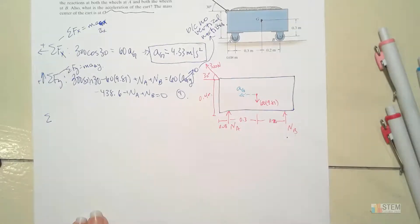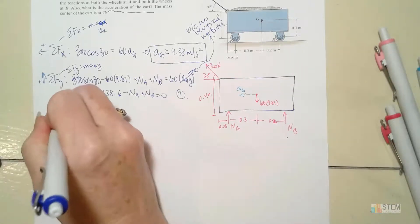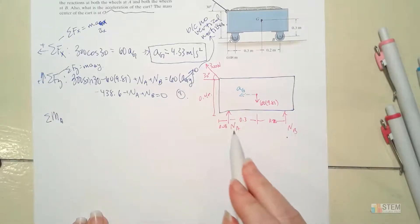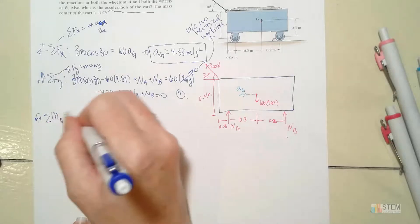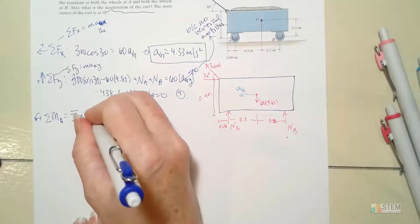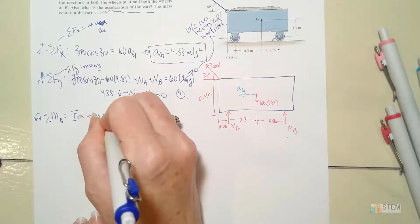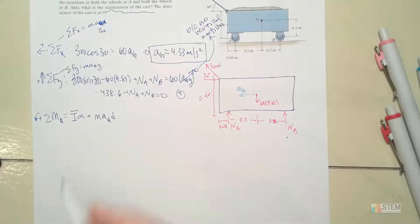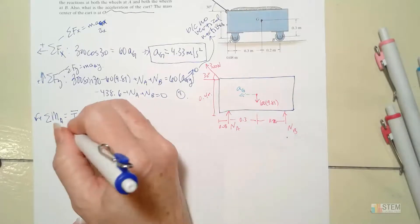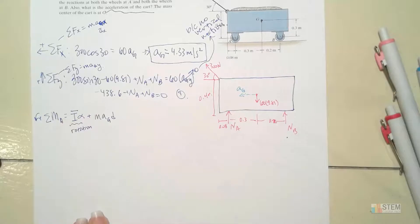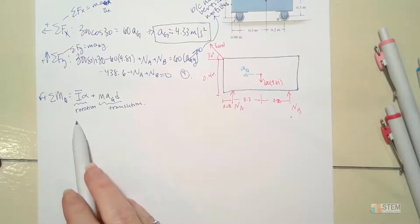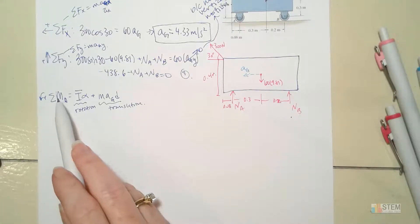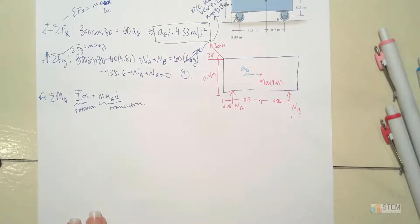Our next equation is going to be a moment equation. The easiest place to take the moment about — the point I picked — was point A. You can also pick point B; it doesn't matter. But picking A gets rid of the unknown NA, which reduces the number of unknowns in our equation. For the moment equation, the general equation for rigid body kinetics problems is: sum of moments equals I-bar times alpha plus M times A_G times d. The first term is for any rotation we may have; the second term is for translation.